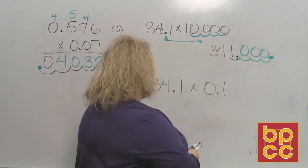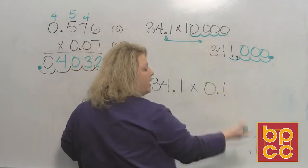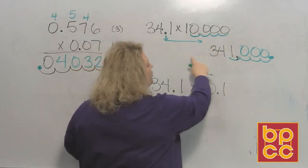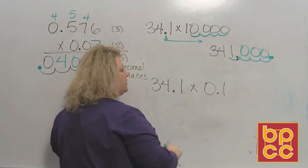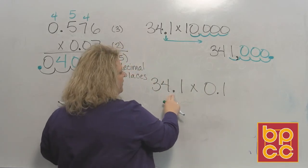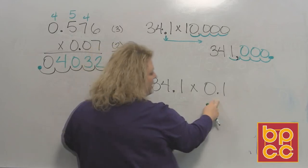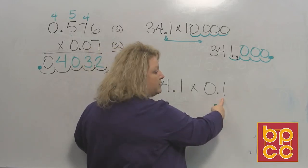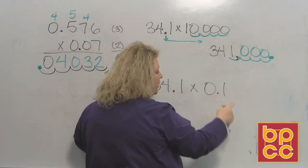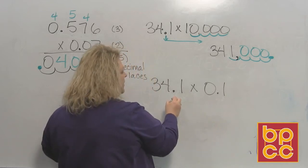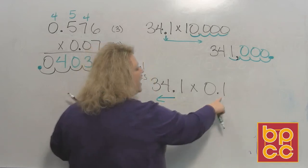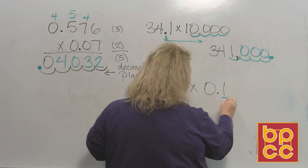Well the same thing holds true if you want to multiply by a big number, a big power of 10, you move your decimal place to the right. If you want to take your number, 34.1, the same exact number, but you want to multiply it by a small power of 10, which this is, because it's 0.1 or 1 over 10,